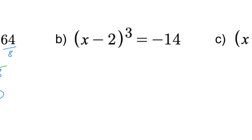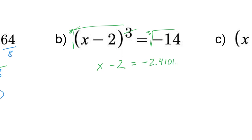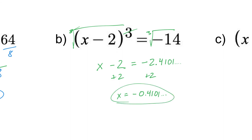For b: (x − 2) to the third power equals negative 14. Take the third root of both sides — that cancels the third power, leaving x − 2 on the left. The third root of negative 14 gives a decimal: approximately −2.4101. It's fine to take the third root of a negative number. Adding 2 to both sides gives x ≈ −0.4101. Don't be afraid to use your calculator — it doesn't have to work out nicely.